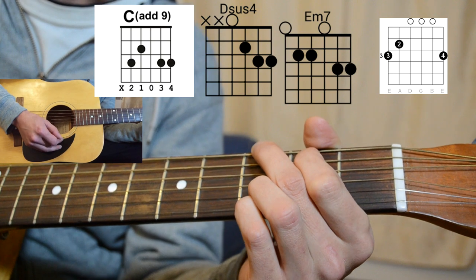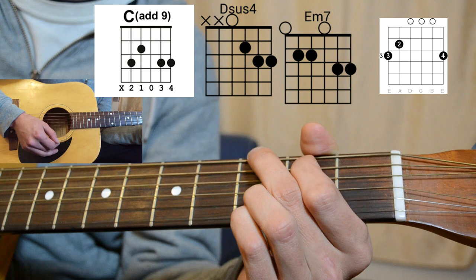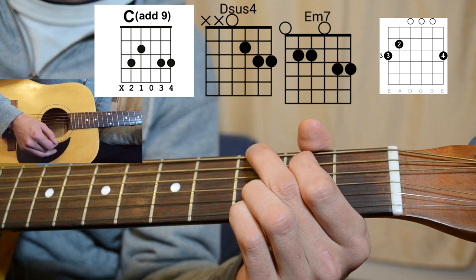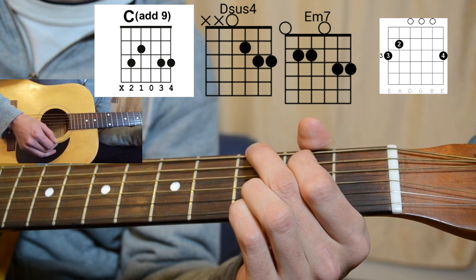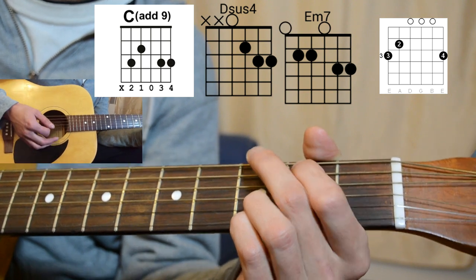So basically you're going to have to work on your strumming pattern a little bit and just timing of it because the chord progression is a little bit different for the verse versus the chorus, but it's pretty much the same thing.